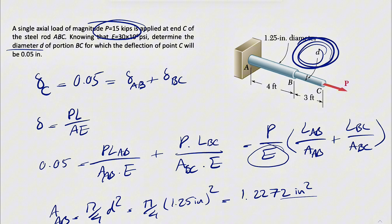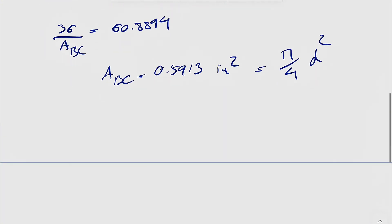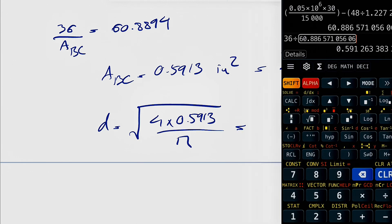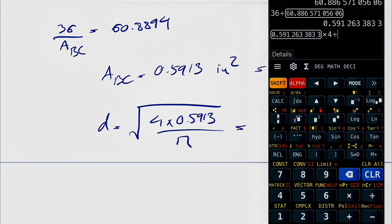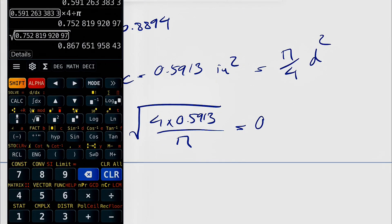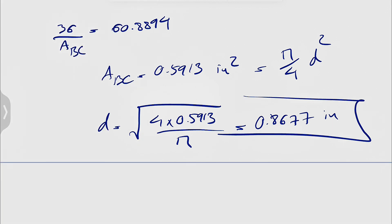And d is the diameter of the BC part and what the question is asking, so d would be basically the square root of 4 times 0.5913, divided by pi. Let's see what we get, so times 4, divided by pi, and we're just going to have the square root of that answer, which is going to be 0.8677 inches, and the final answer for this question.